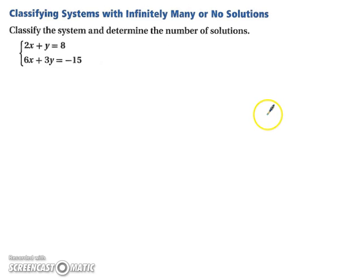Alright. So let's try classifying systems with infinitely many or no solutions. Let's start with finding some way of solving for one of the variables. Well, in this case, it's going to be easier to use substitution than elimination, because y doesn't have any coefficient. When you have a variable that kind of stands alone, with no coefficient other than 1, it's going to be easier to use substitution. So if we want y by itself, we end up with y equals negative 2x plus 8. And now, we must substitute that in for y.